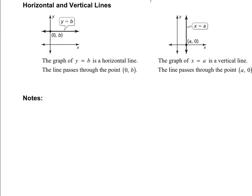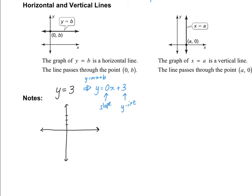For horizontal and vertical lines, if you have a graph Y equals B, where B is a number on the Y-axis, the line is going to be a horizontal line, and it's going to pass through the point (0, B). For example, if I gave you Y equals 3, and we thought of this in terms of Y equals MX plus B, then we could rewrite this equation as Y equals 0X plus 3. So that means it has a slope of zero and a Y-intercept of 3. If we were to graph Y equals 3, it would cross the Y-axis at 3 and it would be a horizontal line.